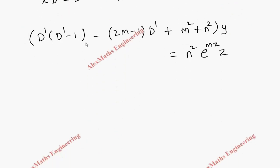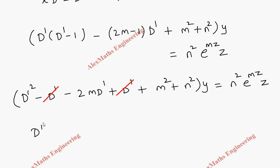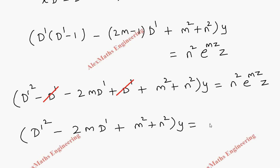Now we have to simplify this term by multiplying through with D dash: D dash squared minus D dash, then D dash multiplied with both terms, and there is a minus on the outside, so minus 2m D dash plus D dash, and the last term is m squared plus n squared into y, equals n squared e power mz into z. We can cancel D dash and minus D dash, leaving D dash squared minus 2m D dash plus m squared plus n squared into y, and on the other side n squared e power mz into z.